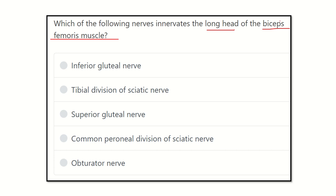The important point here is that biceps femoris has two heads — a long head and a short head. We need to find the nerve supply of the long head. The options are: inferior gluteal nerve, tibial division of sciatic nerve, superior gluteal nerve, common peroneal division of the sciatic nerve, and obturator nerve.